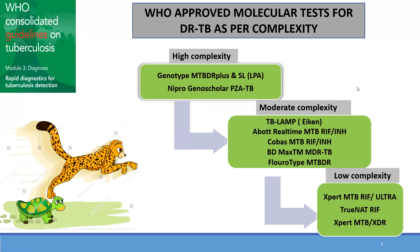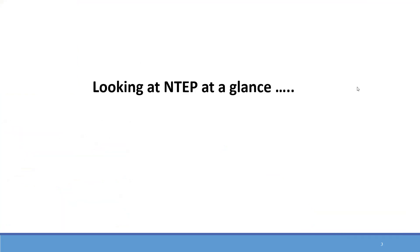These include the high complexity tests, the moderate complexity test, and the low complexity test. High complexity tests are basically the LPAs. Moderate complexity includes TB LAMP, Abbott real-time, and COBAS. Low complexity includes Expert Ultra, TRUNAT, and MTP risk.